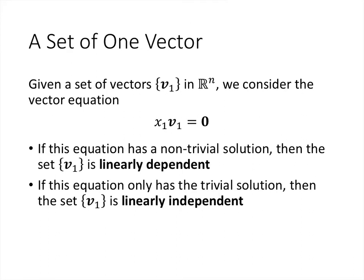Let's think about how this definition applies to small sets of vectors. If we just have one vector in the set, then the vector equation has just one term: one scalar times that one vector equaling the zero vector. If that equation has a non-trivial solution — anything other than x1 equal to zero — then the set is linearly dependent. If v is the zero vector, then any scalar times the zero vector gives the zero vector, so a non-trivial solution exists.